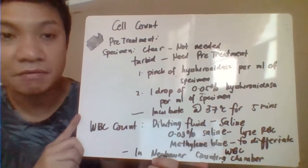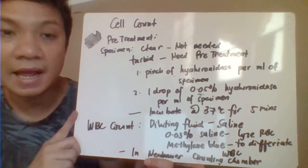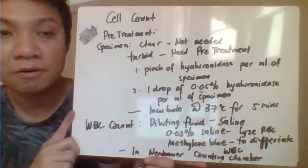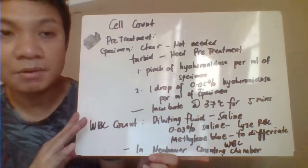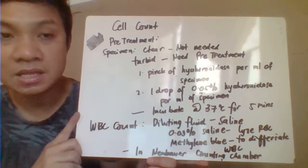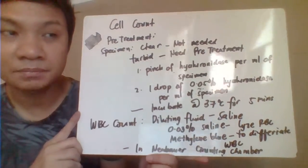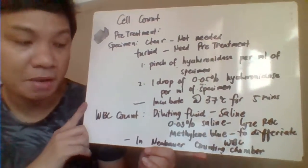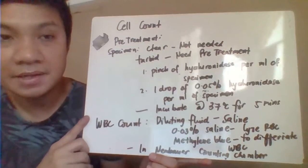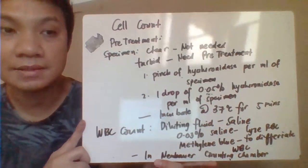You could also use 0.03% saline to lyse red cells, and add methylene blue in order to color the WBC for easier identification. For the WBC count, we are still using the Neubauer counting chamber. Perform the routine cell count using the Neubauer counting chamber and use the standard formula for computation. The normal WBC count for synovial fluid should be less than 200 cells per microliter.